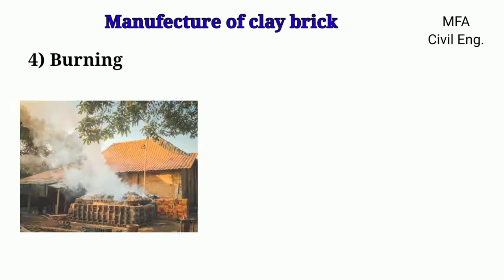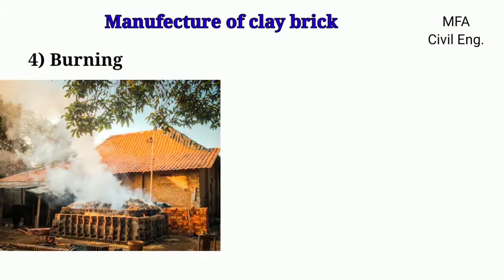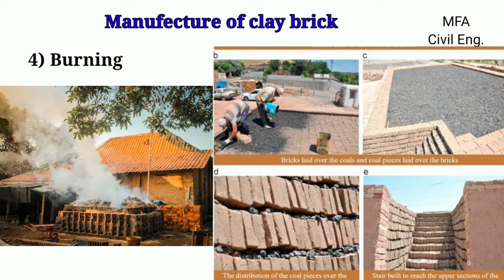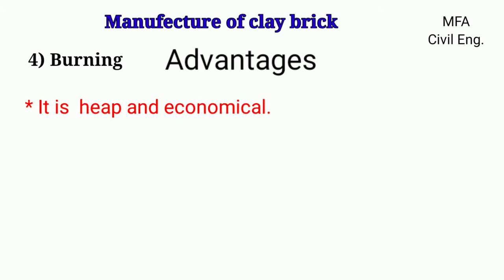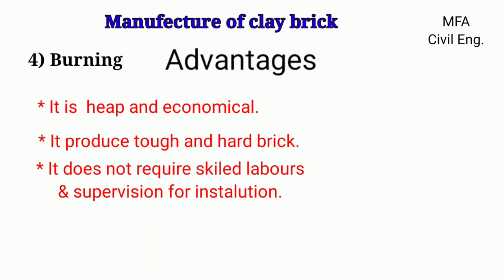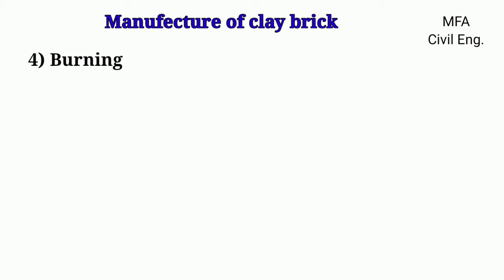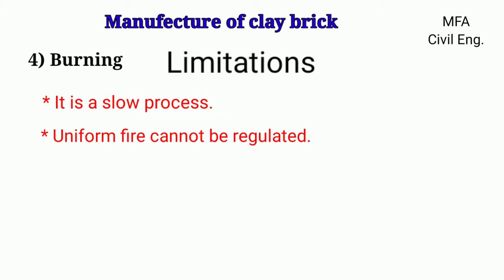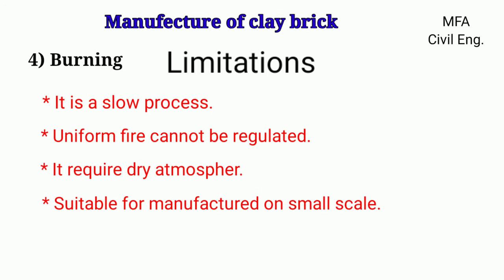Bricks may be burnt by two methods: clamp burning or kiln burning. In clamp burning, bricks and fuel such as coal, stone, or wood are placed in alternate layers for burning in open air. The local name of a clamp is wheat butti. Clamp using coal produces better quality bricks than wood as fuel. Holes are kept at the bottom throughout the length of the clamp for ignition. Advantages include being cheap and economical, producing tough and hard bricks, requiring no skilled labor or supervision, and offering savings in fuel. Limitations include being a slow process, inability to regulate uniform fire causing under-burned or over-burned bricks, requiring a dry atmosphere so it cannot be used in the rainy season, and being suitable only for small-scale manufacturing.